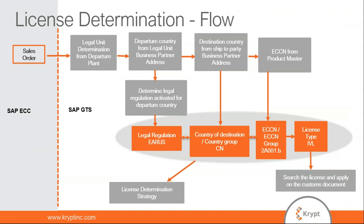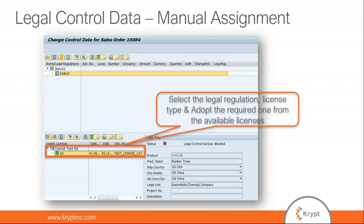The license determination flow works as follows: the legal regulation EAR US is picked from your plant, which is the legal unit in SAP GTS. The destination country CN is your ship-to party country. The ECCN comes from the product master. Based on this combination — legal regulation, country, ECCN, and license type — the system searches for a matching license in SAP GTS and applies it to the customs document. There is also a manual assignment screen where you can override the automatic license assignment by selecting from available licenses in the system. You can configure either manual or automatic assignment depending on your requirements.